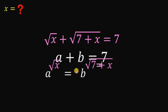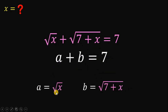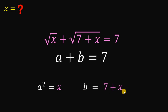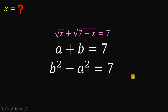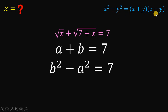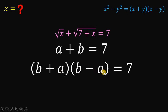We know that a equals square root of x and b equals square root of 7 plus x. If we square both sides, we get a squared equals x and b squared equals 7 plus x. Now, if we subtract a squared from b squared, this gives us b squared minus a squared equals 7 plus x minus x, which simplifies to 7. We can factor this using the difference of two squares: b squared minus a squared equals b plus a times b minus a. We know b plus a equals 7, so we replace that expression with 7.